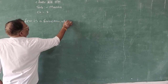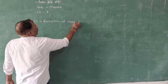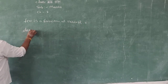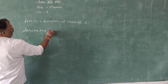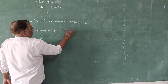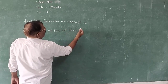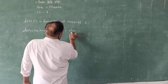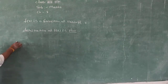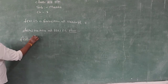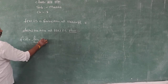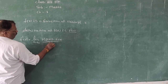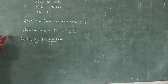For a function f of variable x, the derivative of f(x) is f'(x). By first principle, f'(x) is equal to limit h tends to 0, f(x+h) minus f(x) upon h. This is the definition by first principle.